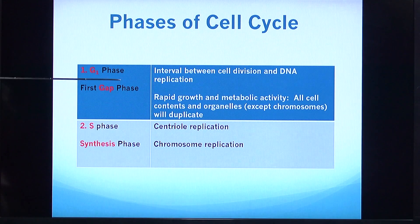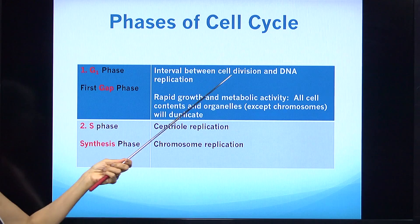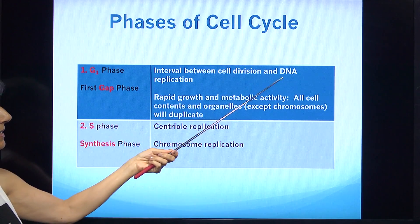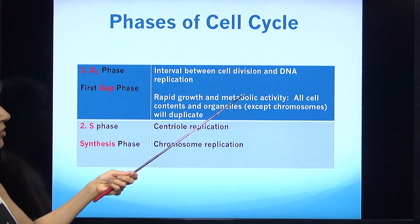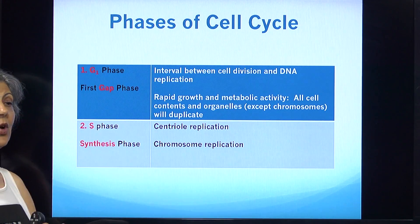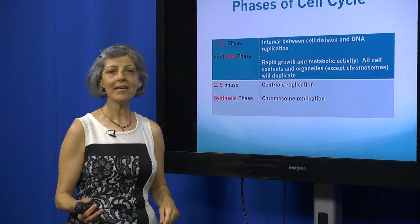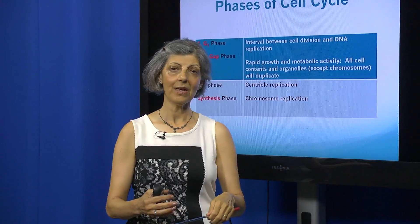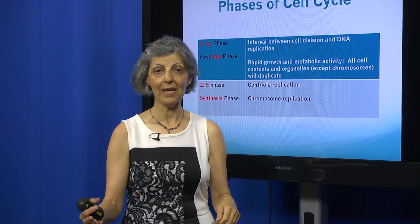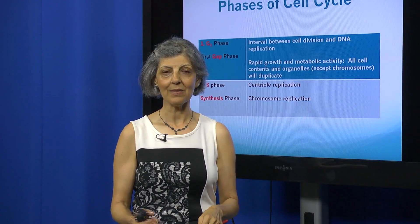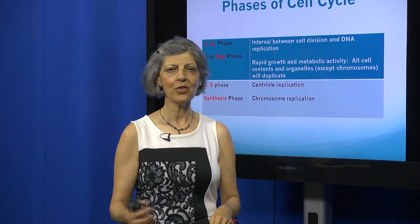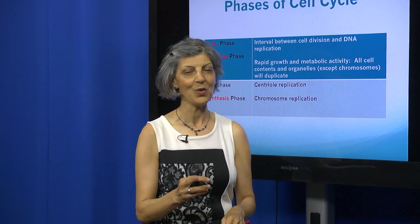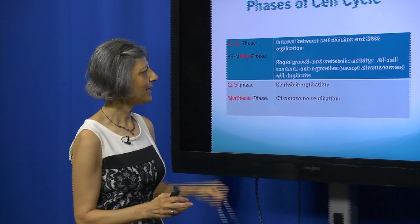We are looking at G1, called gap one or the first gap phase. This is the interval between the cell division and DNA replication — we haven't replicated the DNA yet. So what is the cell doing? It's actually growing, maturing, and multiplying all its contents. The cell is getting ready to divide into two cells, so it has to double up its cytoplasm and all its organelles — the endoplasmic reticulum, the Golgi, and all organelles except the chromosomes, which will replicate later.